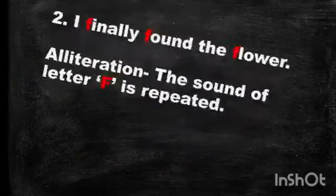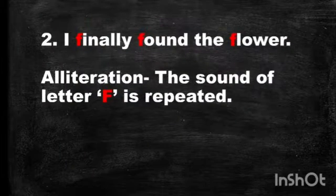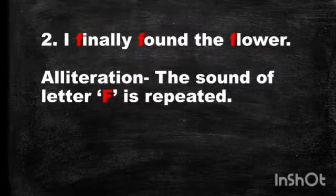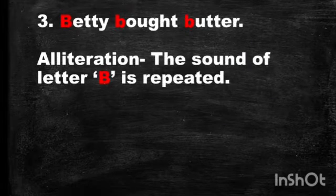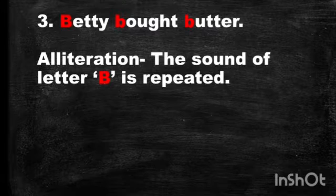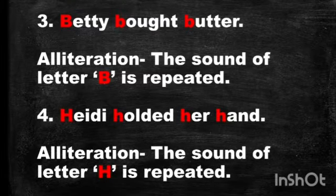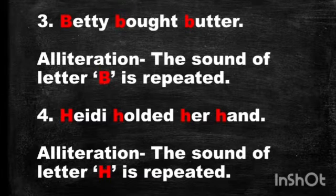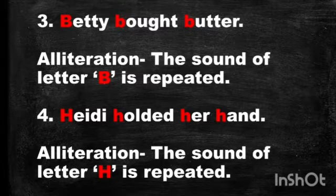Example number two: 'I finally found the flower.' This sentence is alliteration, and the sound of the letter F is repeated. Example number three: 'Betty bought butter.' Again, alliteration — the sound of the letter B is repeated. Number four: 'Heidi held her hand.' Again, the sentence is alliteration, and the sound of the letter H is repeated.